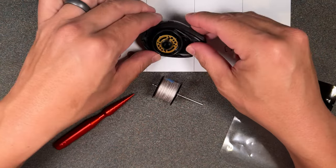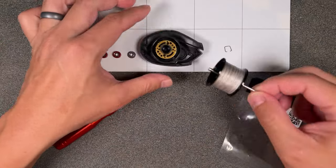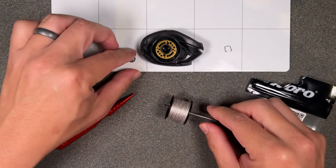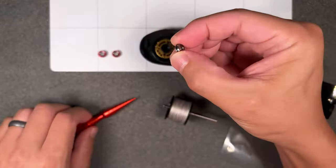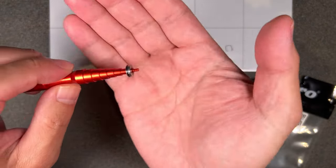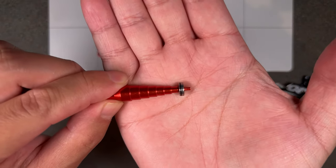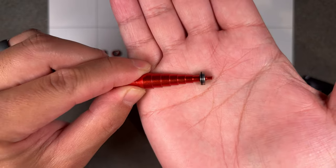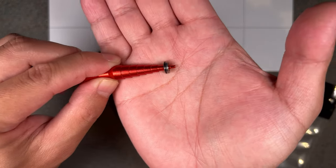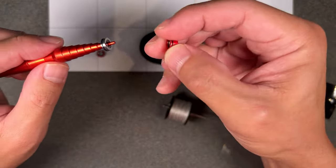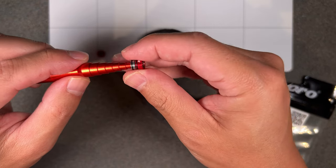So I went ahead and took off the side plate, took out the spool, and then removed the stock bearing from the side plate. And I don't know if you guys can see that, but this one also has the O-ring in the middle of the bearing, or on the side of the bearing, on the outer race.